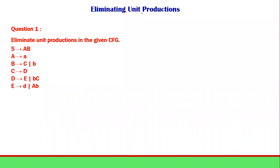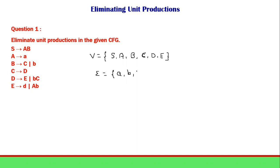The next type of production we need to eliminate is unit productions. With the name itself we can tell it is having a unit value — a single variable. In the given question we have variables A, B, C, D, E and input symbols a, A, B, and d. We have to eliminate all unit productions — those which have a single variable on the right-hand side.